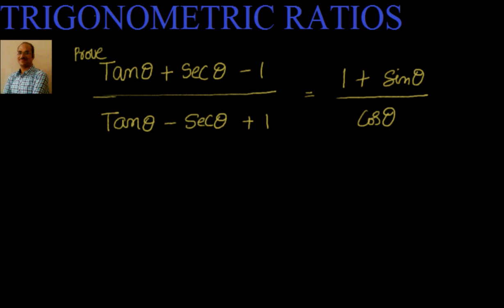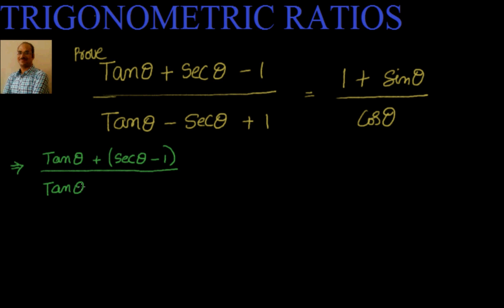My next step will be to rewrite the left hand side as (tan θ + sec θ − 1) / (tan θ − (sec θ − 1)). Here I identify tan θ as 'a' and (sec θ − 1) as 'b', so this is of the form (a + b) / (a − b). Now let's try to rationalize this and see what happens.